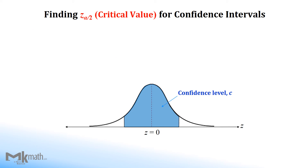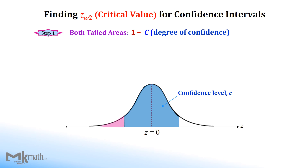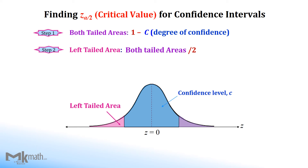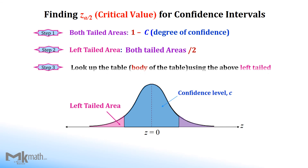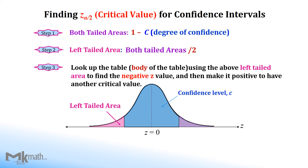Since we used the left cumulative area z-table, we need to find the left-tailed area to find the negative z-critical value. First, subtract the given confidence level from 1 and then divide it by 2 to get the left area. Look up the table using the left area to find one of the critical values. Once we get the negative critical value, we make it positive to have the other one.